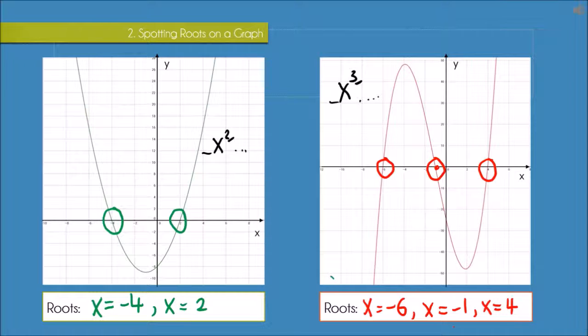So you can think of the 2 as meaning it's going to have two roots, and the 3 here for the cubic as meaning it's going to have three roots. So then if you had a polynomial which started with x to the power of 4, you would expect it to have four roots, and if it started with x to the power of 5 it would of course have five roots.